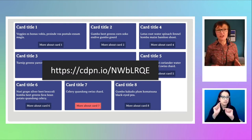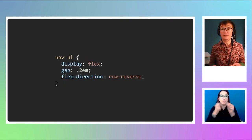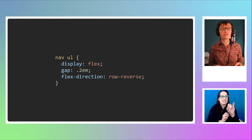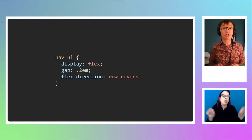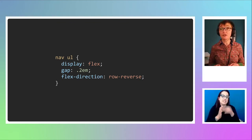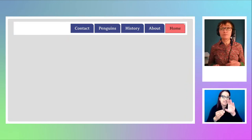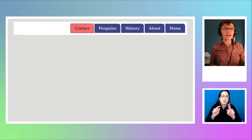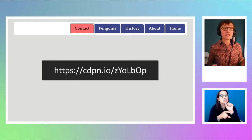And it isn't just Grid — you can also cause problems with Flexbox. Here I've said display: flex and flex-direction: row-reverse, which basically switches the items to start from the end of the flex container. Maybe that was the layout I wanted, but I probably didn't want people tabbing backwards through the navigation. That's really weird. You can do this with Flexbox as well.